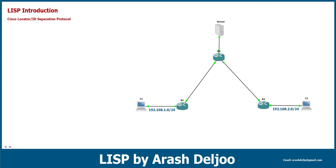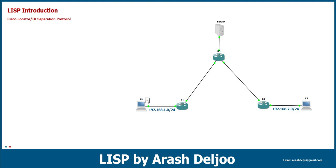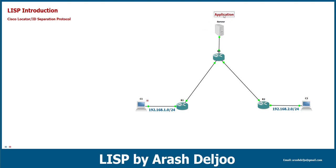Here we have a simple scenario. In this simple network we have three routers: Router 1, Router 2, and Router 3. We also have a server and two clients, Client 1 and Client 2. There is a connection between Client 1 and the server, where the server is running an application such as HTTP, FTP, or some other application.